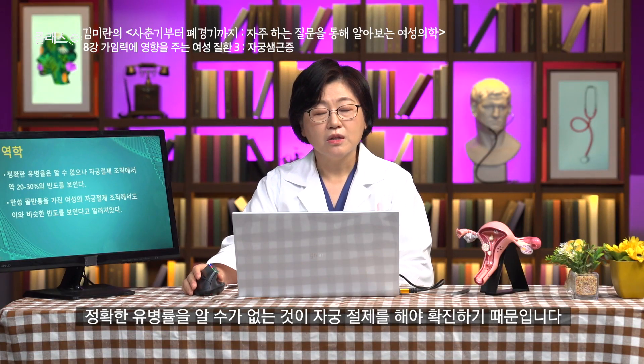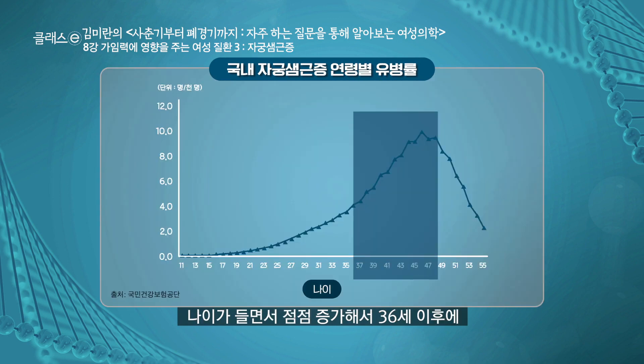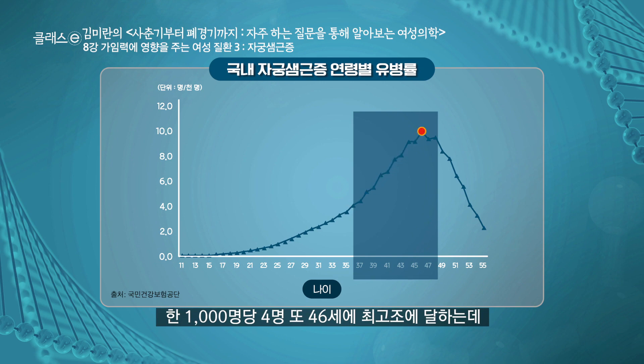정확한 유병률을 알 수가 없는 것이 자궁 절제를 해야 확진을 하기 때문입니다. 자궁 절제 조직에서 약 20에서 30% 정도의 빈도를 보인다고 하고, 만성 골반통을 가진 여성의 자궁 절제 조직에서도 비슷한 빈도를 보인다고 알려져 있습니다. 우리나라에서 빅데이터 연구를 했는데, 자궁 선근증이 굉장히 많이 증가하고 있습니다. 15년간 5.4배의 증가율을 보이고 있으며, 36세 이후에 1,000명당 4명, 46세에 최고도에 달합니다. 혼인 연령과 출산 연령이 늦어지면서 선근증이 있는 상태에서 임신을 하시려는 분들이 있기 때문에 그 중요성이 많이 대두되고 있습니다.